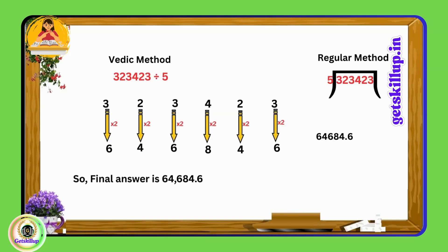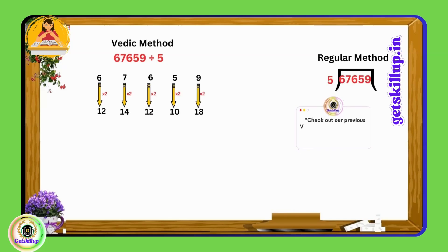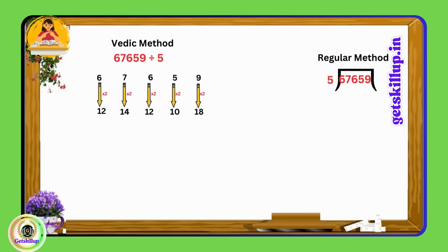Let's consider a larger number such as 67659. Every digit in this number is more than 5, so when we double it we'll get a two digit number. If we need to divide this number by 5 we follow the same method. First we double each digit: 6 doubles to 12, 7 doubles to 14, 6 doubles to 12, 5 doubles to 10, and 9 doubles to 18.